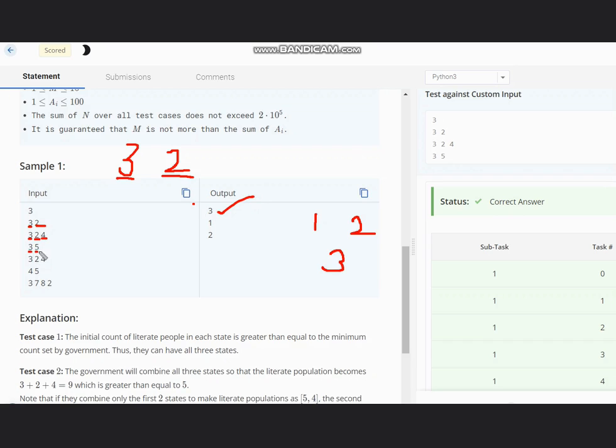Now let's understand the second test case: 3, 5, 3, 2, 4 so minimum count needed is 5. So to make minimum count 5 we can have, as you see first 3 is less than 5 so we combine 3 with 2, 3 plus 2 this becomes 5 so it can be 5 comma 4. But in this case when you take 4, 4 is less than 5 so we need all the 3 states it will become 9 and as 9 is greater than 5 all states are combined to make one state so the answer is 1.